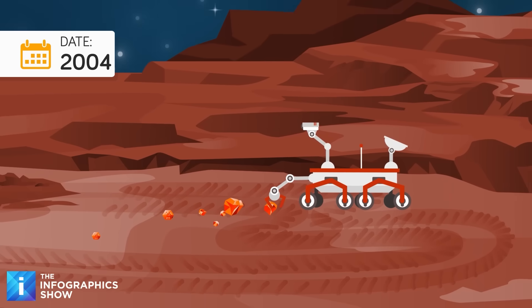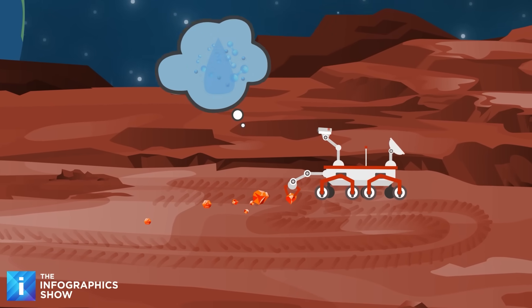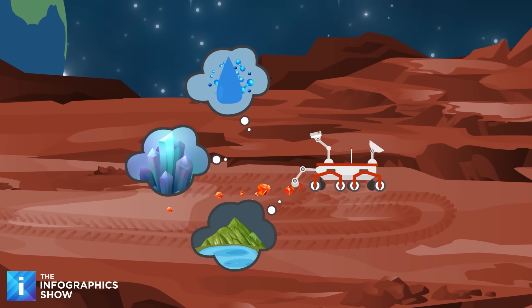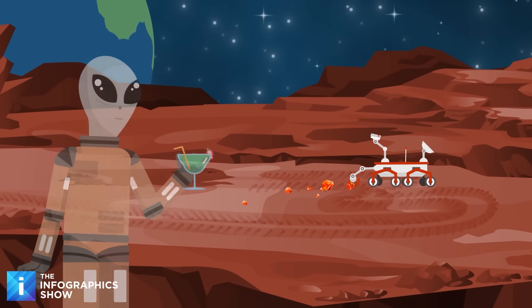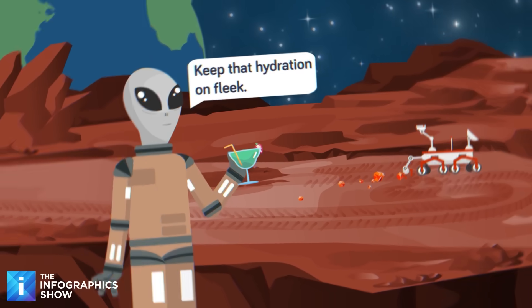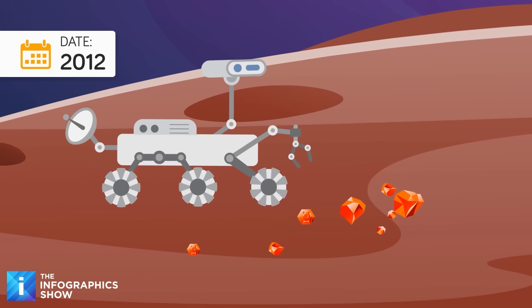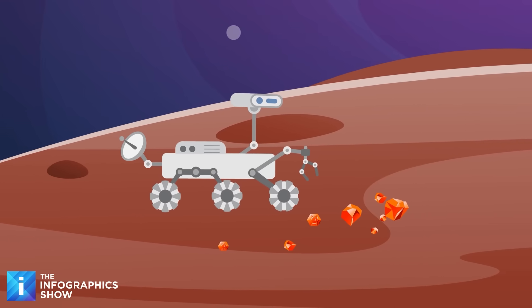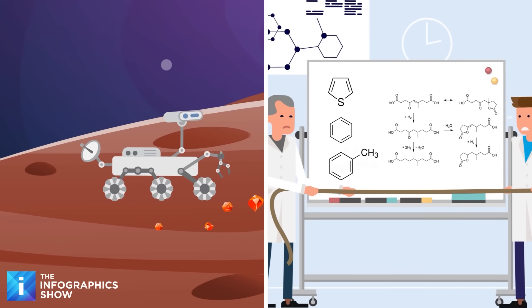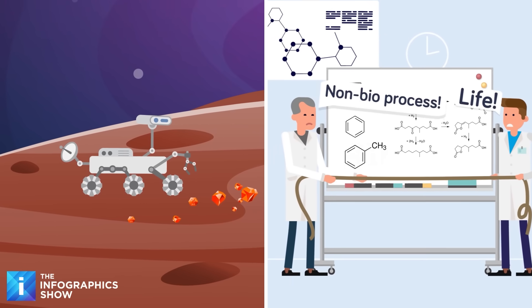Starting in 2004, rovers found evidence of past liquid water on Mars, including hydrated minerals and geological features indicative of ancient lakes and streams. This significantly strengthened the idea that Mars was once a more habitable planet. In 2012, an advanced Curiosity rover landed in Gale Crater, a site believed to have once been a lakebed. Curiosity detected various organic molecules in Martian rocks, including thiophenes, benzene, toluene, and small carbon chains.